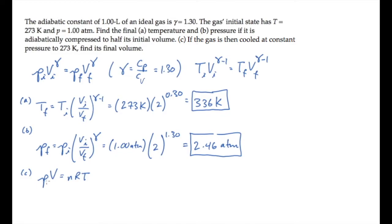First, for this cooled state, and then again for what was called the final state in parts A and B. If we take the ratio of these two ideal gas laws, the pressure is constant, so it cancels, and we can solve for the volume in this cooled state.